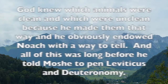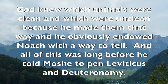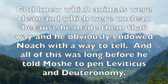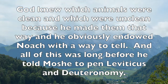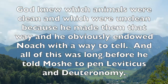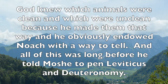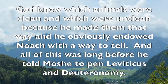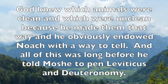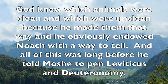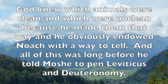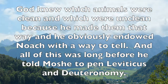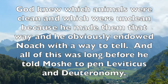God knew which animals were clean and which were unclean because he made them that way, and he obviously endowed Noach with a way to tell — we don't know how, but we know it was all long before he told Moshe to pen Leviticus and Deuteronomy. God told Noah; we don't see exactly how in the text, but somehow he told him, and thus Noah knew how to carry out the instructions.